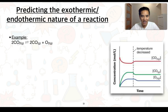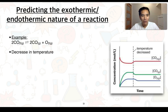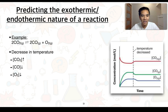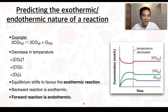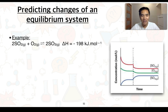For our second-to-last example, we look at how we can predict the exothermic or endothermic nature of a reaction using the same reaction. We're told the temperature was decreased at a particular time. Looking at the graph, we see a decrease in temperature resulted in an increase in CO2, and a decrease in CO and O2. This means the system is trying to increase the temperature by favoring the exothermic reaction. Since the concentration of our reactant increased, the backward reaction is exothermic, and therefore the forward reaction is endothermic — giving a positive delta H value.